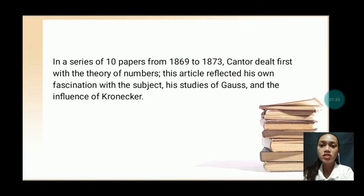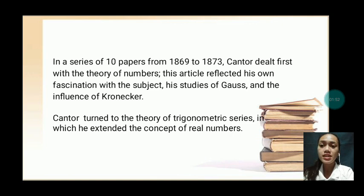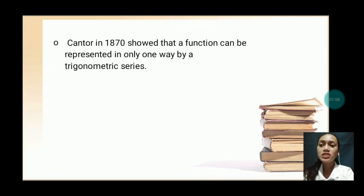In a series of 10 papers from 1869 to 1873, Cantor dealt first with the theory of numbers. This article reflected his own fascination with the subject, his attitudes, and the influence of Kronecker. Cantor turned to the theory of trigonometric series, in which he extended the concept of real numbers.